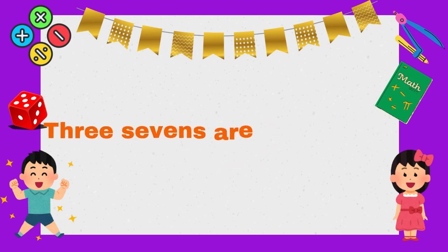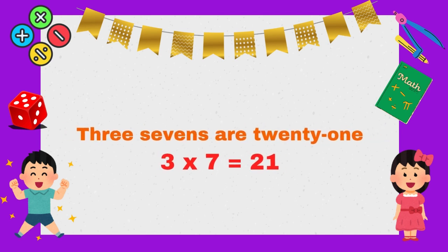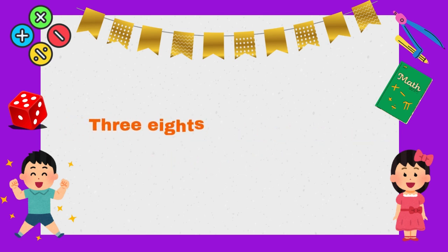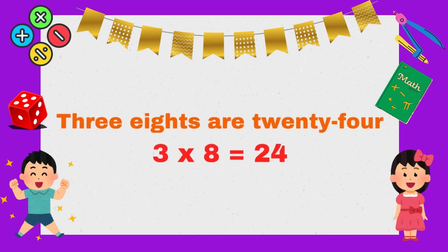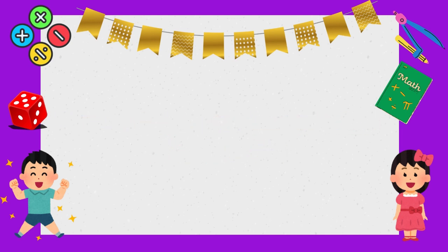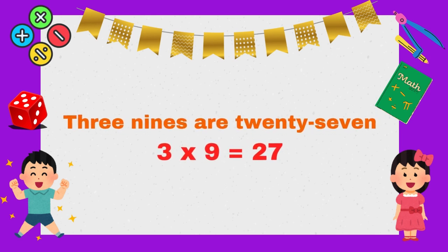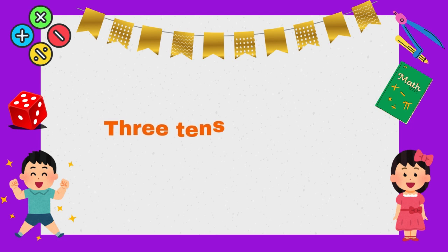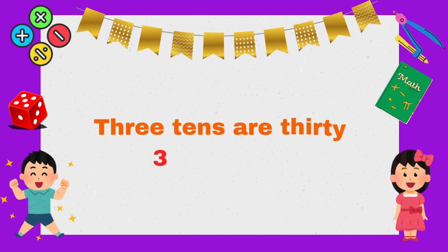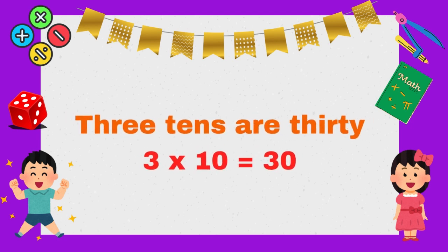Three sevens are 21. Three eights are 24. Three nines are 27. Three tens are 30.